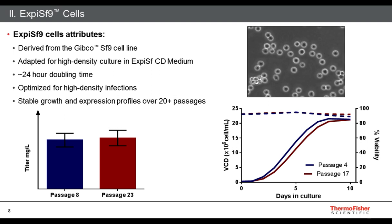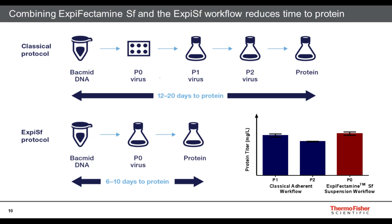Next question: did you observe any differences in the quality of virus production between regular SF9 cells and XPSF9? We have not. The graph comparing P0 virus from the XPSF system versus P1 or P2 virus from the classical system shows no issues with quality or protein expression. In fact, P0 from XPSF can give slightly better titers than P2 from classical protocols, since further amplification introduces additional passaging effects that may reduce viral quality.